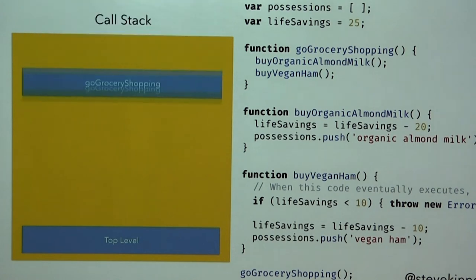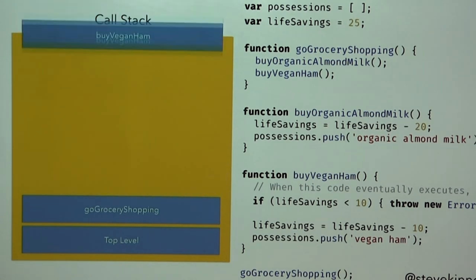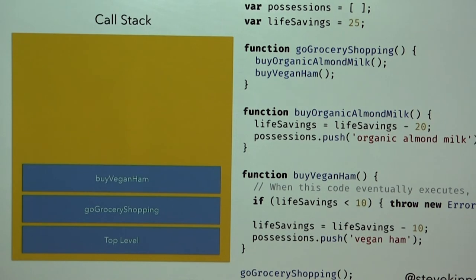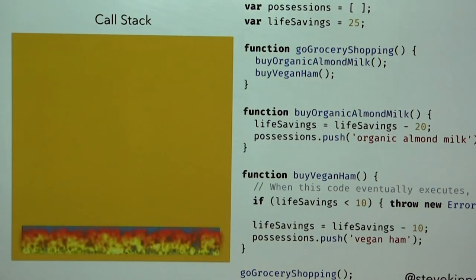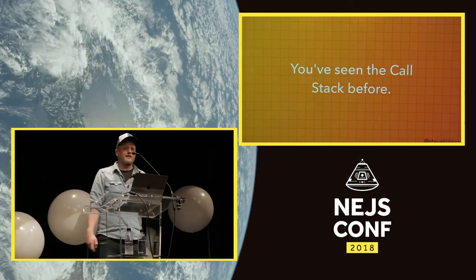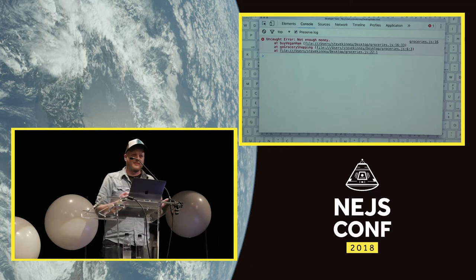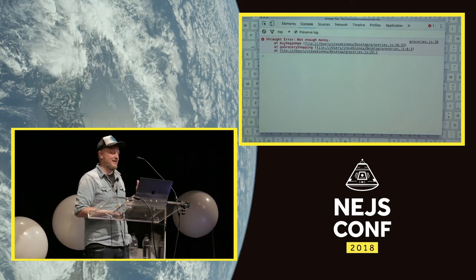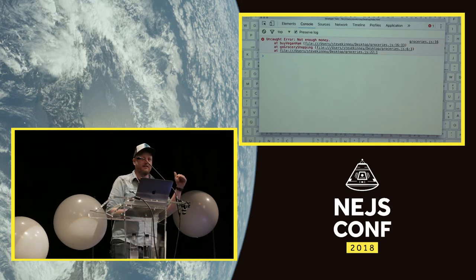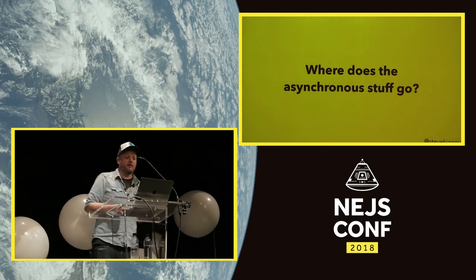We run through the code again: go-grocery-shopping calls buy-organic-almond-milk, that executes fine, then we go to buy-vegan-ham — and things blow up. It's going to blow up the entire call stack. You've seen the call stack before; you just don't have warm fuzzy feelings about it because the context in which you usually see it is when something has blown up, showing everything that happened from where the error started to where it escalated.